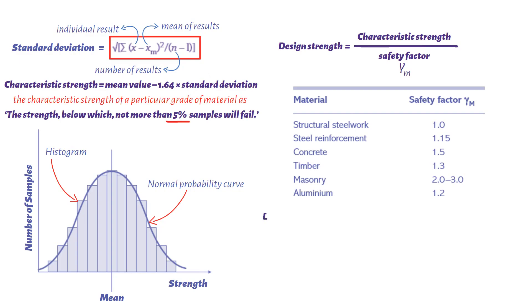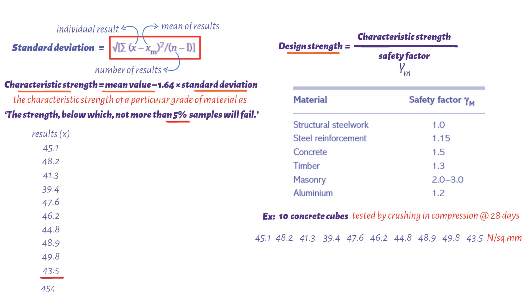Let's take an example. 10 concrete cubes were prepared and tested by crushing in compression at 28 days. The following crushing strengths in newton per square millimeters were obtained. We need to determine first the mean strength, the standard deviation, and then the characteristic strength. Finally, we need to find the design strength. So, to work out the mean strength, we sum the total of these results and divide by number of cubes. This gives us a value of mean strength equals 45.5 newton per square millimeters.